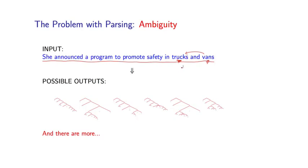But under another interpretation, she could be announcing a program to promote, firstly, safety in trucks and secondly, vans. So I am announcing a program to promote safety in trucks and also vans. Much less plausible, but nevertheless a potential interpretation of this sentence.